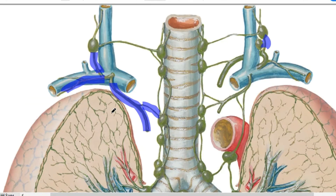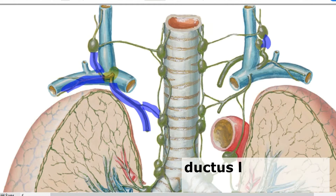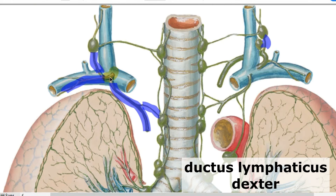On the right side, these three trunks join and create a small duct called ductus lymphaticus dexter — the right lymphatic duct. This duct is very small, only about three to five millimeters, and it drains into the venous angle — angulus venosus — between the internal jugular vein and subclavian vein. It is not permanent; it is present in only about 20% of people. In 80% it is absent, and the three trunks drain into the venous angle independently.